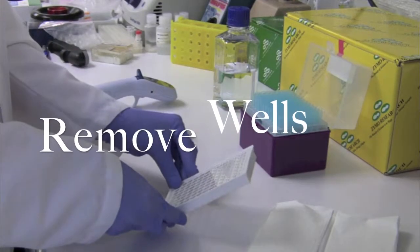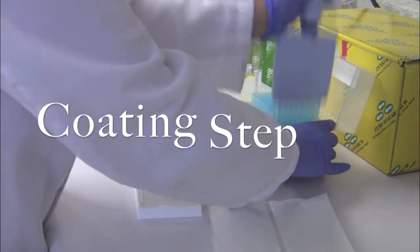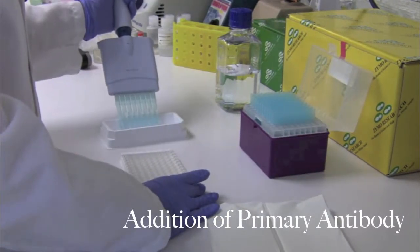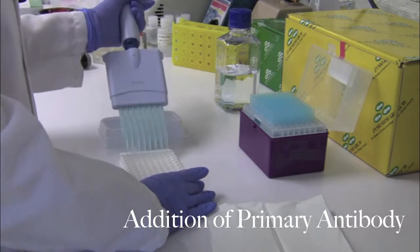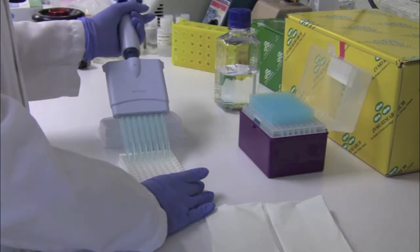Another added benefit is that the workflow is so simple. To begin, simply remove the strips of wells that will not be used for the experiment. Next, anti-5-HMC polyclonal antibody is coated to the bottom of the 96-well plate. The plate is then incubated at 37 degrees Celsius for one hour.